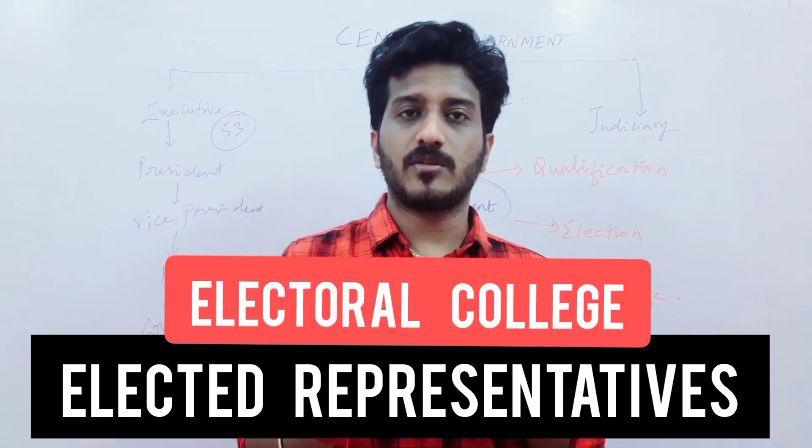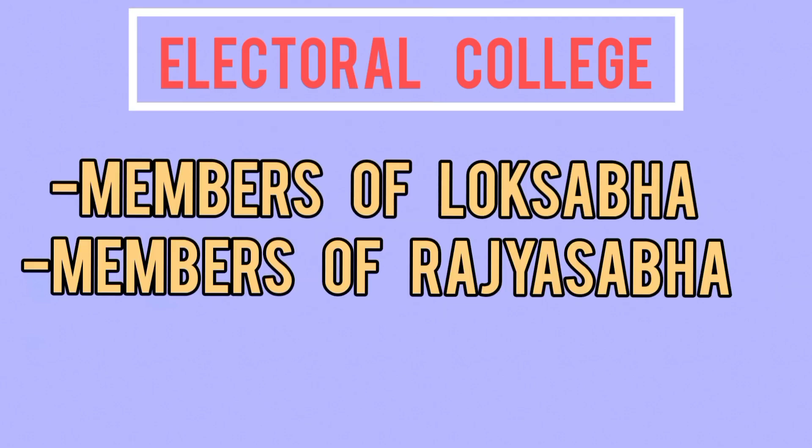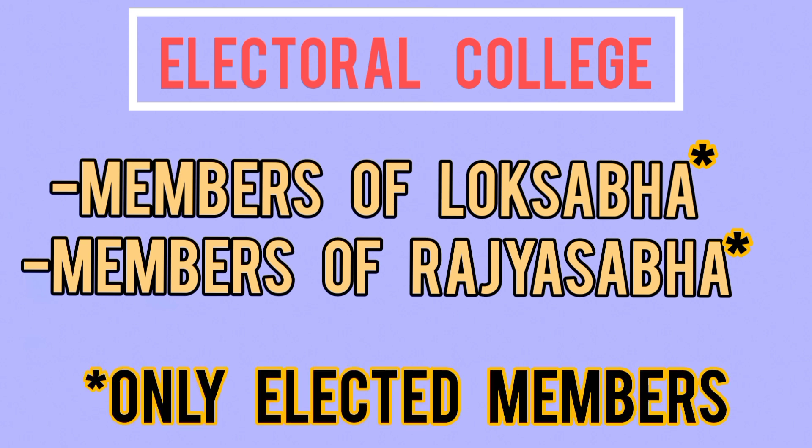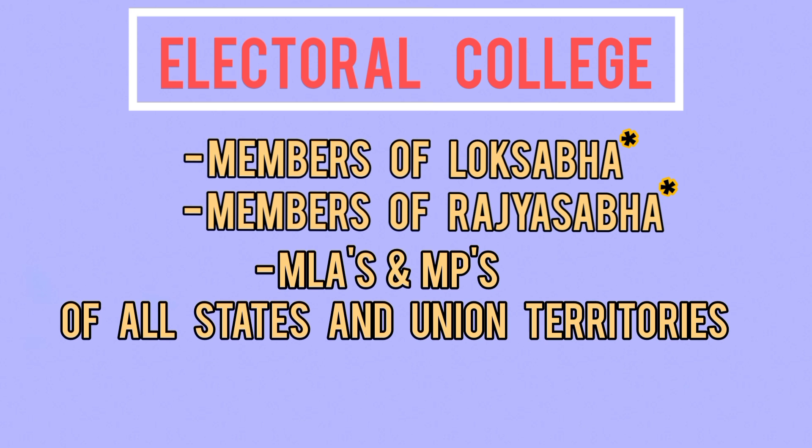The voting takes place through an electoral college. The elected members of the two houses of parliament vote here. Note that nominated members are not included — only elected members are involved. In the electoral college, elected members from all states and union territories are also involved.